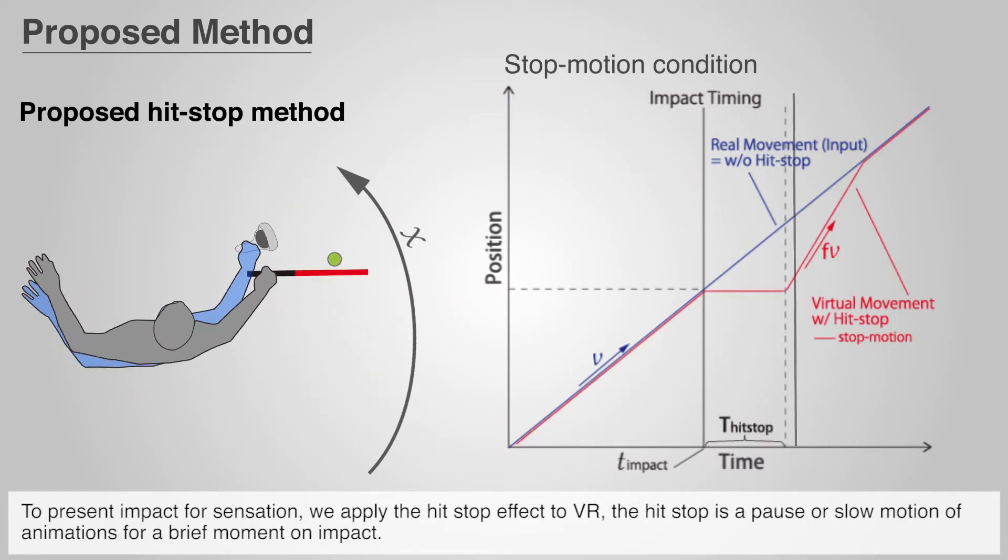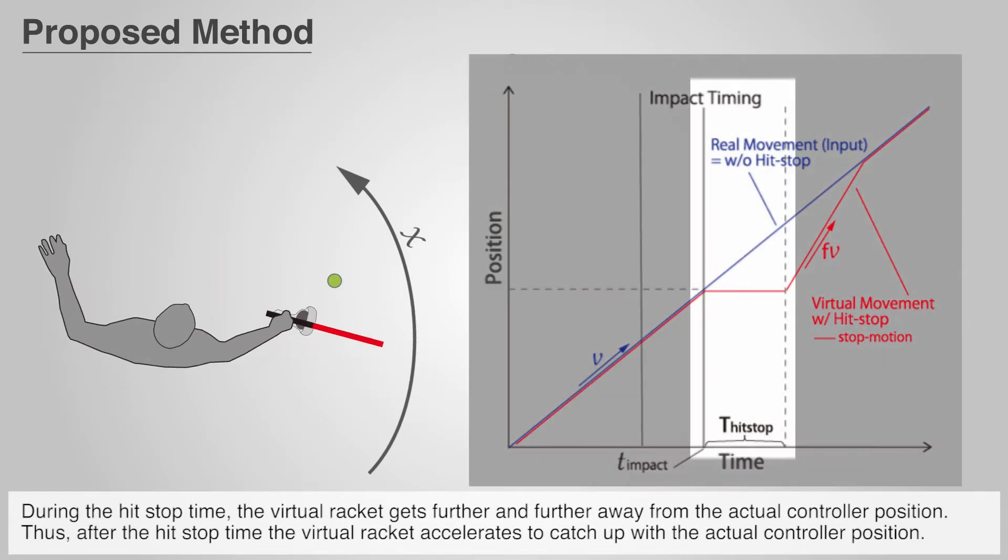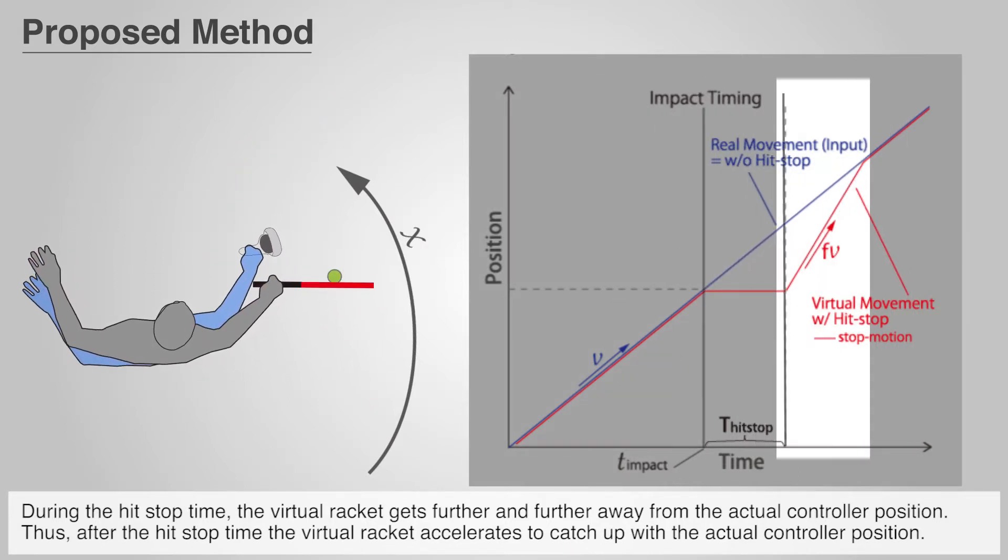To present impact force sensation, we apply the hit stop effect to VR. The hit stop is a pause or slow motion of animations for a brief moment on impact. During the hit stop time, the virtual racket gets further and further away from the actual controller position. Thus, after the hit stop time, the virtual racket accelerates to catch up with the actual controller position.